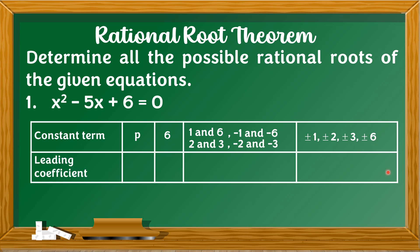Next, we determine the leading coefficient — that is the value of Q. The leading coefficient is the coefficient of x squared, which is 1. The factors of 1 are positive/negative 1. After finding the factors of the constant term and the leading coefficient, we determine the value of P over Q by dividing P by Q.